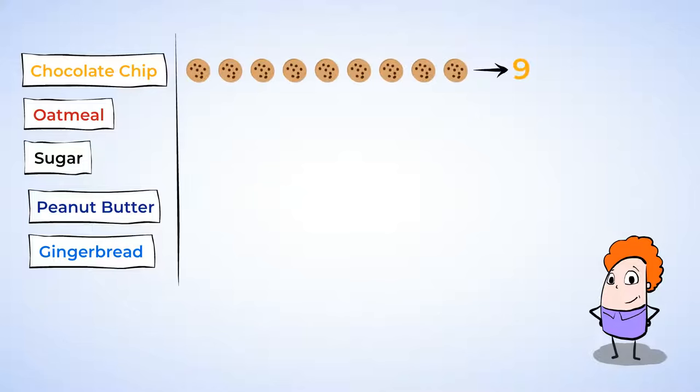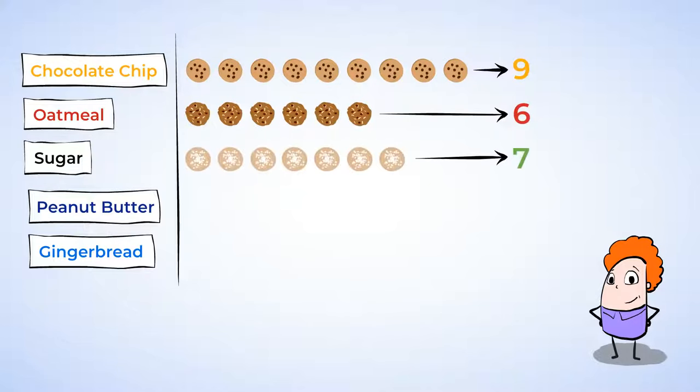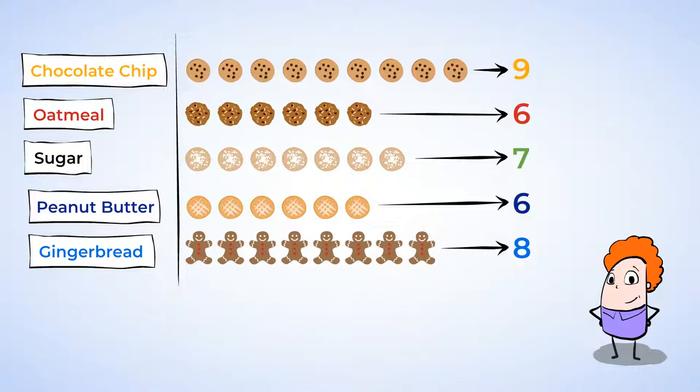Nine people like chocolate chip cookies, six people like oatmeal cookies, seven people like sugar cookies, six people like peanut butter cookies, and eight people like gingerbread cookies.